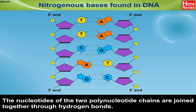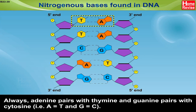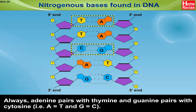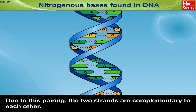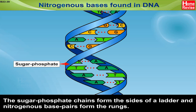The nucleotides of the two polynucleotide chains are joined together through hydrogen bonds. The base pairing is specific — adenine always pairs with thymine and guanine pairs with cytosine; that is, A pairs with T and G with C. Due to this pairing, the two strands are complementary to each other. The sugar-phosphate chains form the sides of a ladder and nitrogenous base pairs form the rungs.